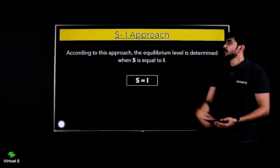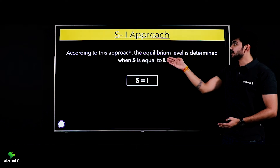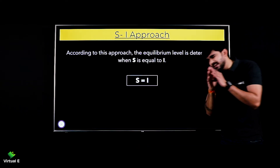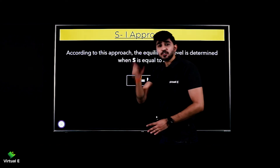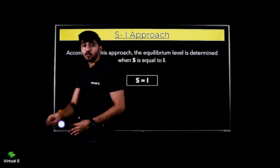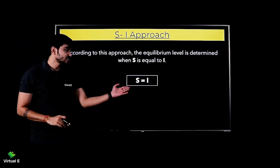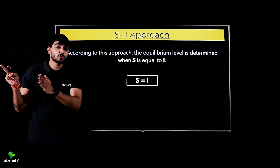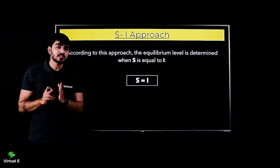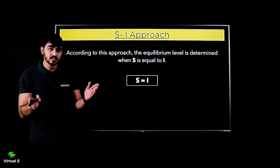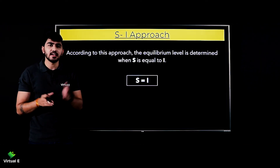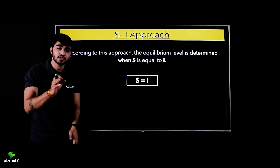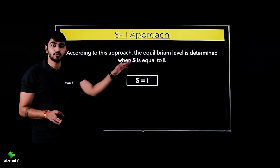According to this approach, the equilibrium level is determined when S is equal to I. That is your condition - your saving should be equal to your investment, that is S is equal to I. AD=AS approach mein condition thi AD should be equal to AS. Similarly, S and I approach mein condition chahiye saving should be equal to your investment, that is S is equal to I.